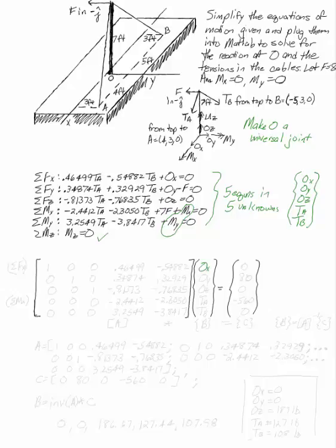We can put this into a matrix form where we consider in each of these equations the coefficients of these five unknowns. So the first equation comes from the sum of the forces in X. This looks like there's a 1, that's the coefficient of OX.